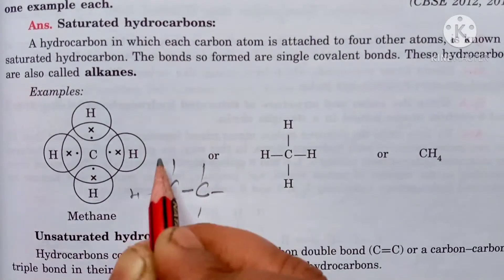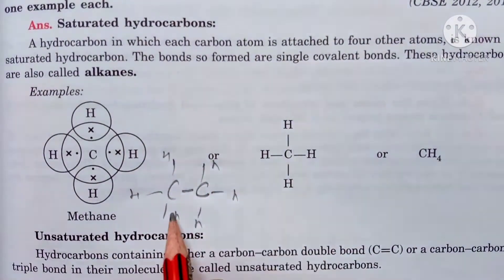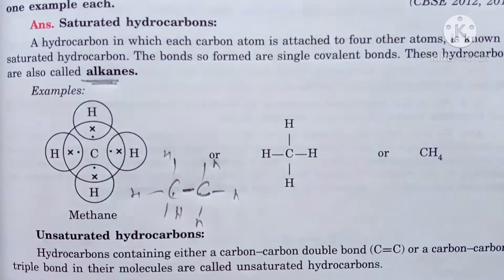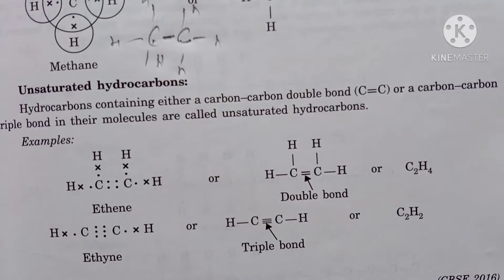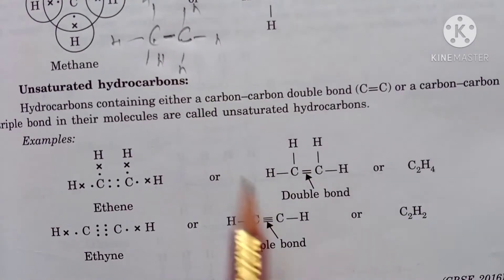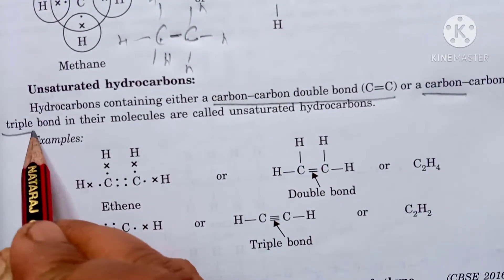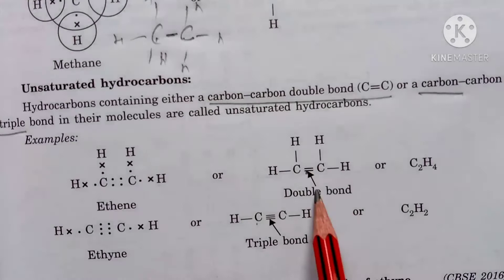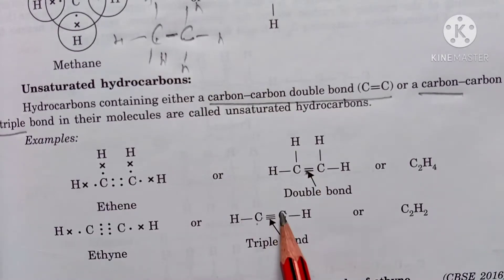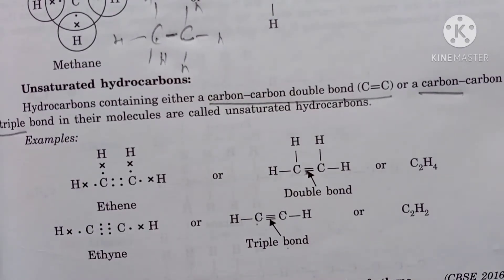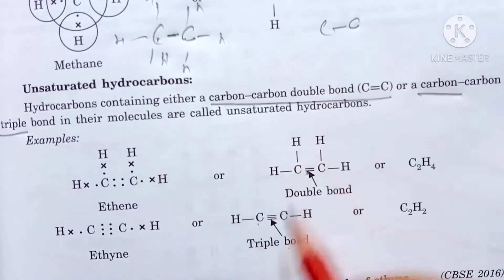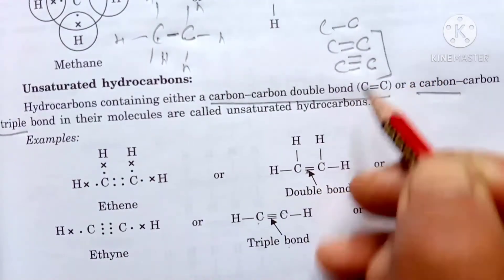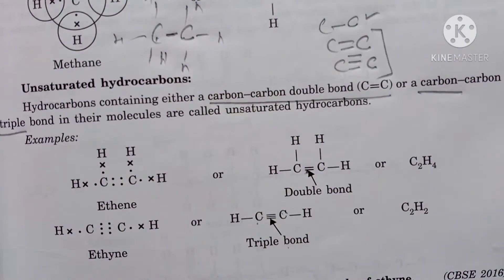Saturated hydrocarbons have only single bonds between carbon atoms — for example, a C-C single bond with four bonds around each carbon. Unsaturated hydrocarbons have carbon-carbon double bonds (alkenes) or carbon-carbon triple bonds (alkynes). So saturated hydrocarbons have C-C single bonds only, while unsaturated hydrocarbons have C=C double bonds or C≡C triple bonds between carbon atoms.